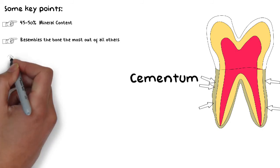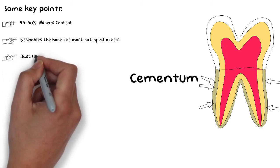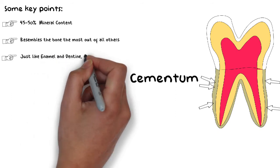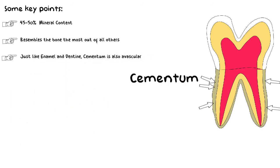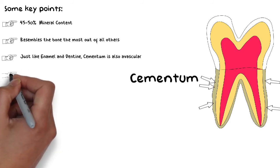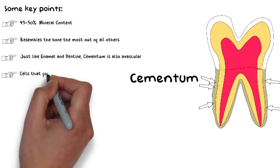Out of all the structures of the tooth, cementum resembles bone the most. However, cementum — just like enamel and dentine — is avascular in nature, while bone is a vascular tissue. So out of all four tissues, only the pulp contains vessels, while cementum, enamel, and dentine are avascular. The cells that form the cementum are known as cementoblasts.